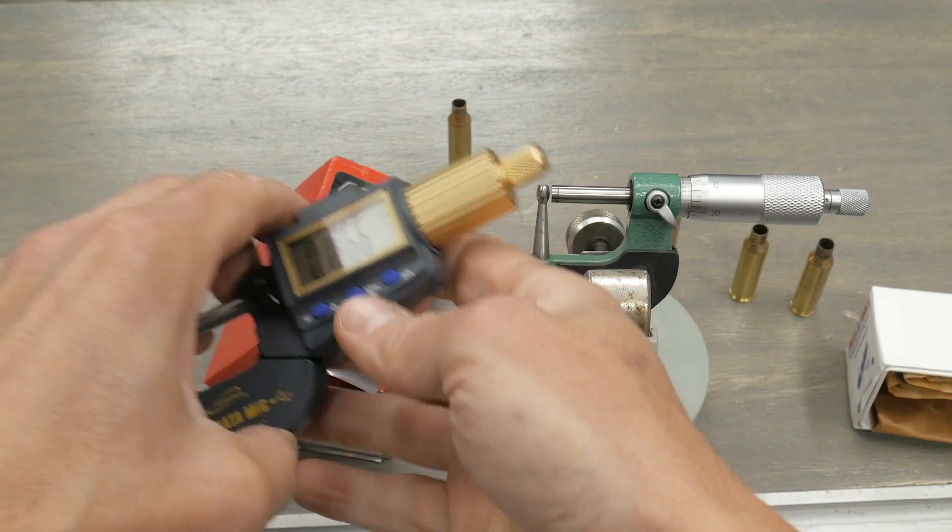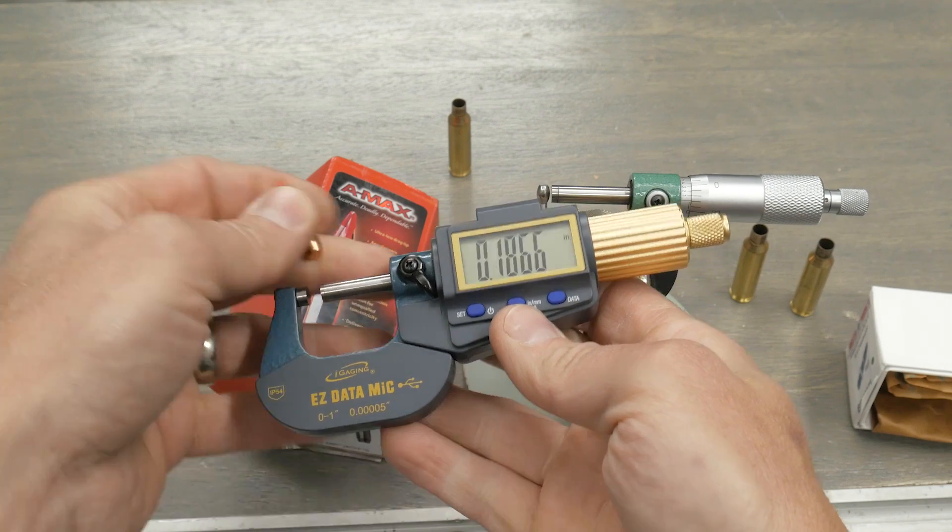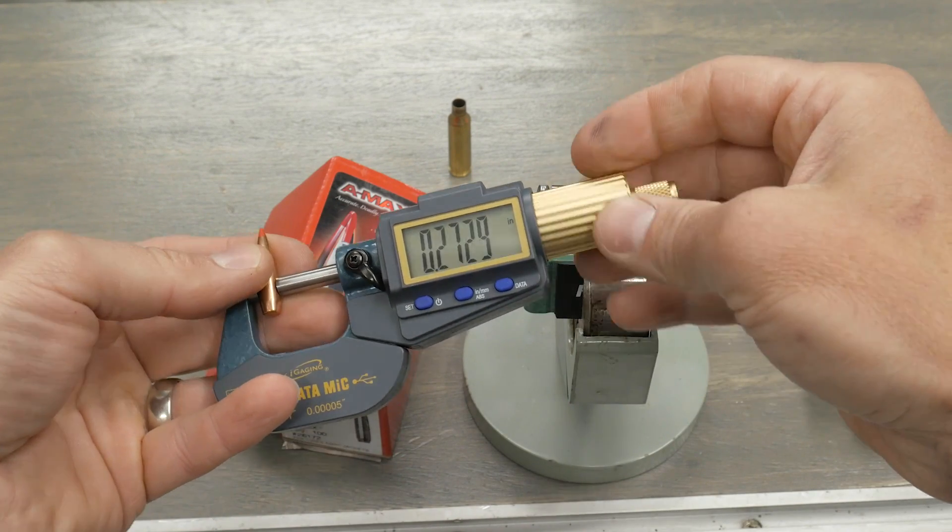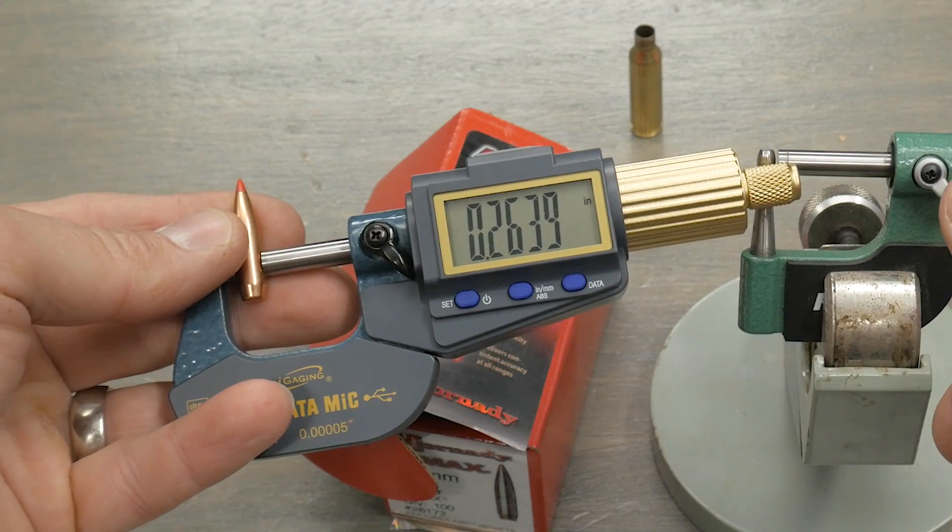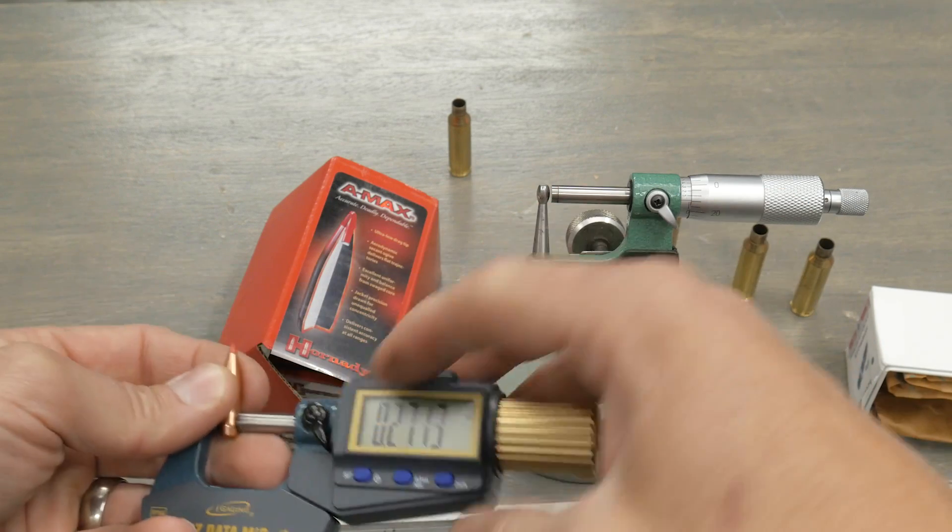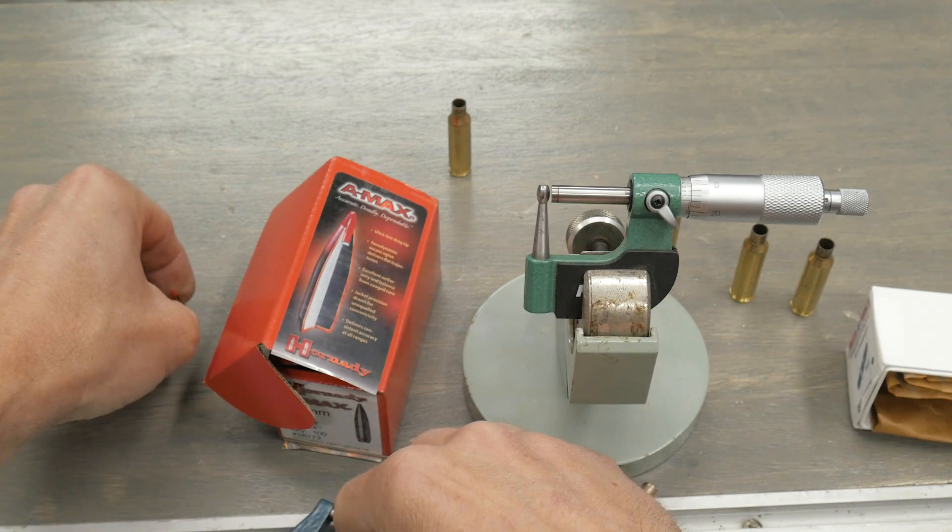And then I'm going to use my new iGaging Easy Data Mic digital micrometer, this is going to give us tenth level. Okay, so 263.9, I expected this to be 264, so we'll call that 264. Let's go to our pen and paper and figure this out.